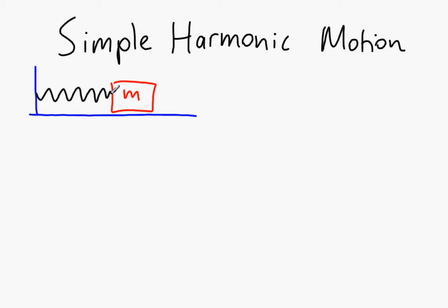It's being pulled and pushed backwards and forwards by the spring in simple harmonic motion. How do we know it's simple harmonic motion? In this case the horizontal force from the spring F is going to be minus kx, where x is the displacement from the equilibrium position. If we displace it to the right, the spring is going to pull to the left, so the force is proportional to the extension and in the opposite direction.